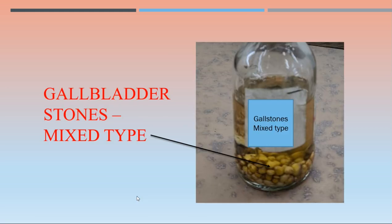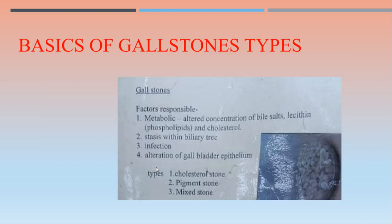The third specimen is gallbladder stones of the mixed type variety. Multiple gallbladder stones are visible. There are three types: cholesterol stones, pigment stones, and mixed type stones. The mixed type has a larger amount of cholesterol as the predominant component.